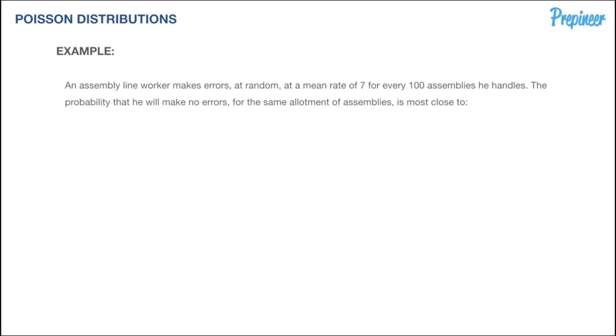Let's head back over to our first example problem. An assembly line worker makes errors at random at a mean rate of 7 for every 100 assemblies he handles, and we want to know the chances he makes no errors. First, we need to realize this is a Poisson distribution—he's making errors randomly.